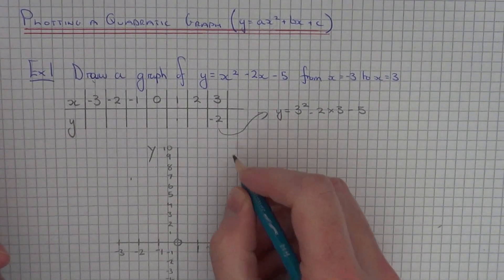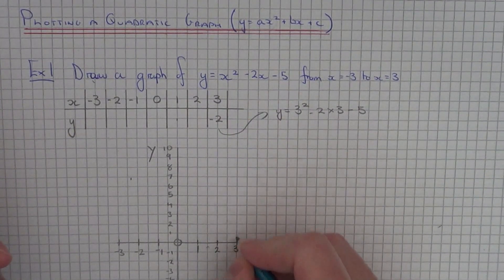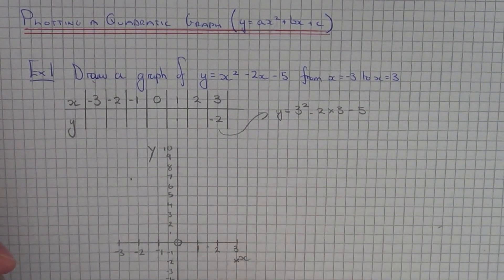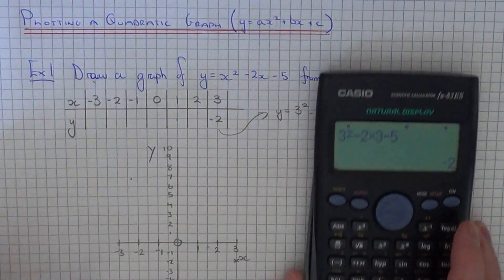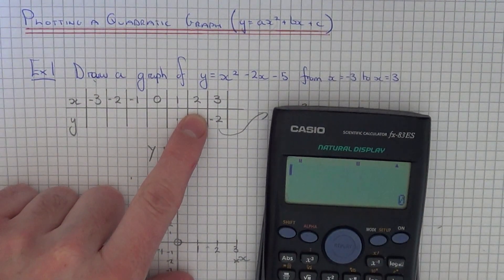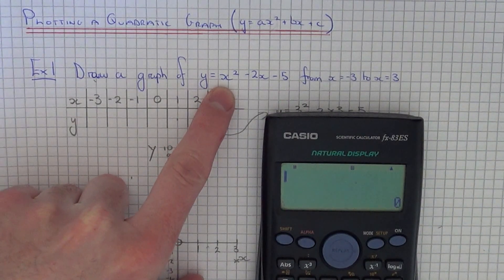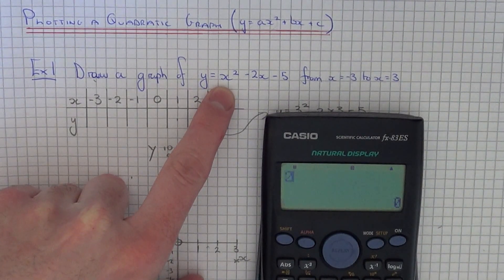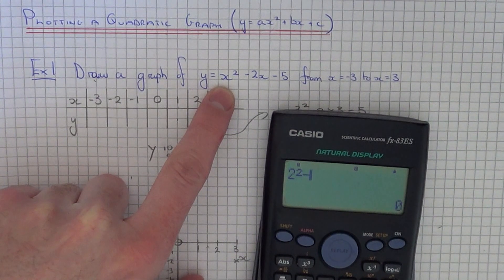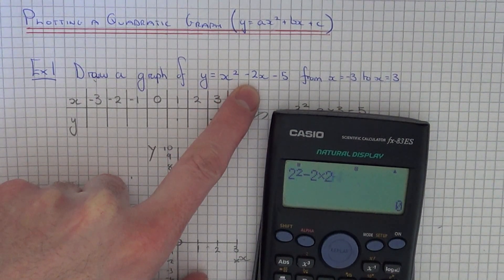So our end coordinate is 3 comma minus 2. So let's just plot that on. So next we're going to do x equals 2. So let's substitute this into our formula. So let's go 2 squared minus 2 times 2 take away 5.